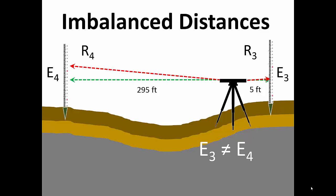In fact, because the distance to R3 is so short, error E3 rounds off the distance. Here in our example, reading R3 is 4.72 feet and reading R4 is 6.97 feet.